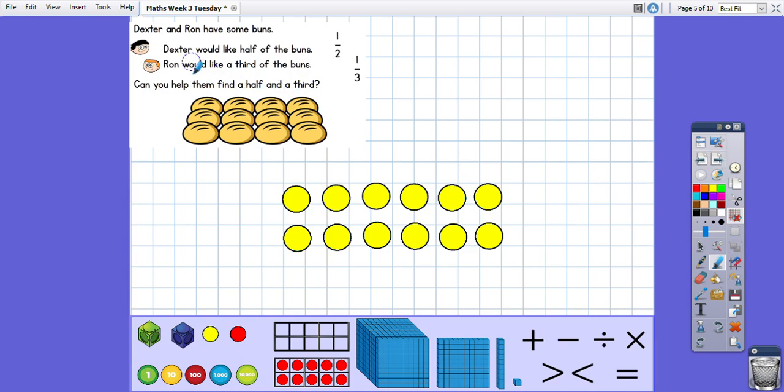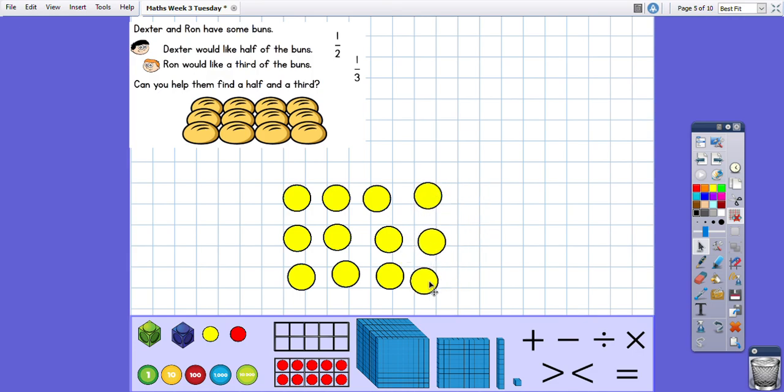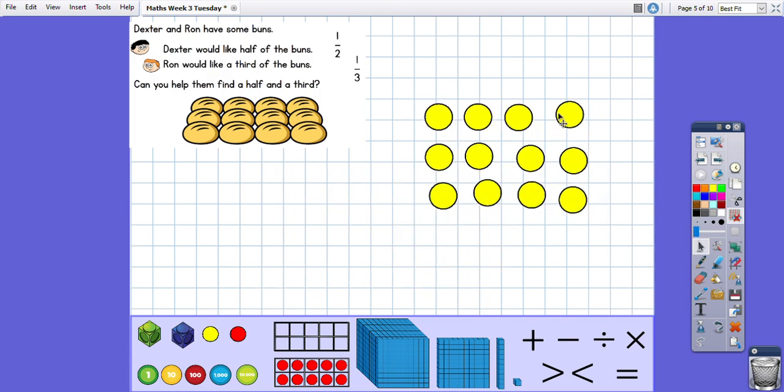Okay. Dexter and Ron have some buns. Dexter would like half of the buns and Ron would like a third of the buns. So we need to find half and third. Okay, so I've got some counters here and I'm going to arrange them the same way the buns are arranged. Okay. Just like this. So these counters represent the buns that Dexter and Ron are talking about.